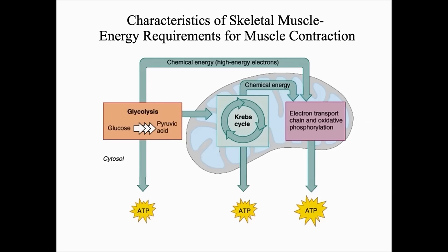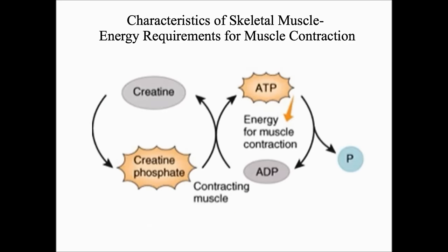For a muscle contraction to occur, it requires energy. Energy comes from a process called cellular respiration — the breakdown of a glucose molecule into ATP. ATP is the energy source for a muscle contraction. Although ATP is the energy source, our body does not store ATP. Instead, we store creatine phosphate, which can be readily broken down to help produce ATP.